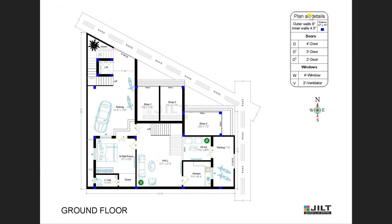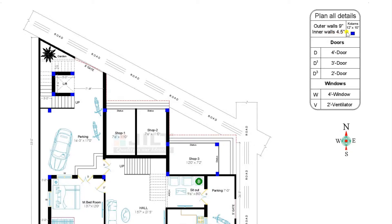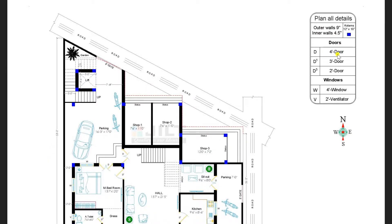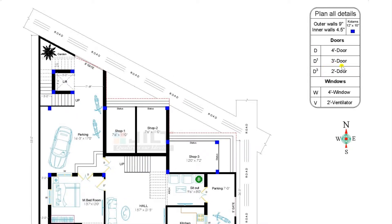First of all, see the dimensions available. The outer walls are of 9 inches and inner walls are of 4.5 inches. The doors D1 are dimensions of 4 feet, doors D3 are 3 feet, and toilet doors are 2 feet. Windows are of sizes 4 feet and ventilators are of sizes 2 feet.